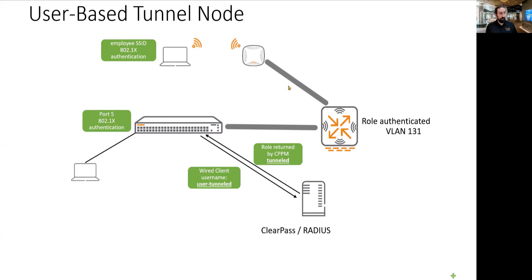On this slide, when the user connects — in our case on the switch on interface number five — the user will attempt to perform .1x authentication. The switch will take that request and send it to ClearPass for authentication with the username 'user tunneled'.